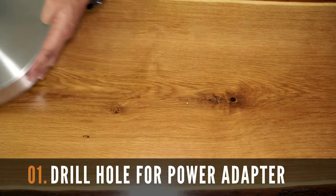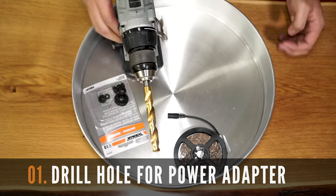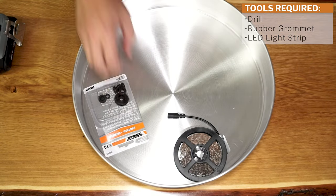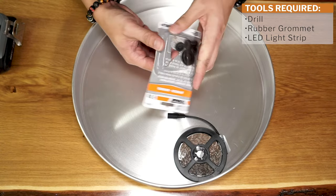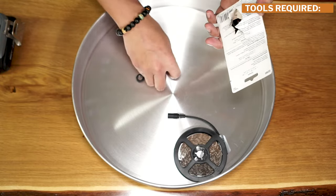This first step is a slight modification to Daniel Schiffer's original design. You're going to need your drill, rubber grommets, and your LED light strip.